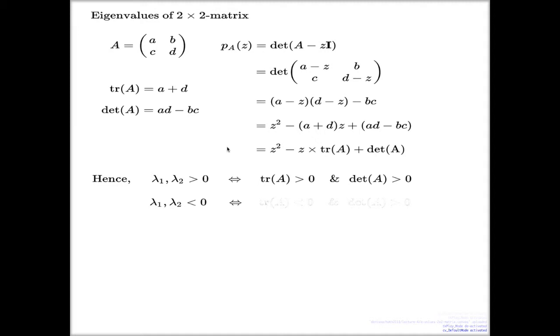Negative, what is negative? Trace is negative, obviously, because the sum of two negative values must be negative. And determinant positive, because the product of two negative values gives you a positive value.